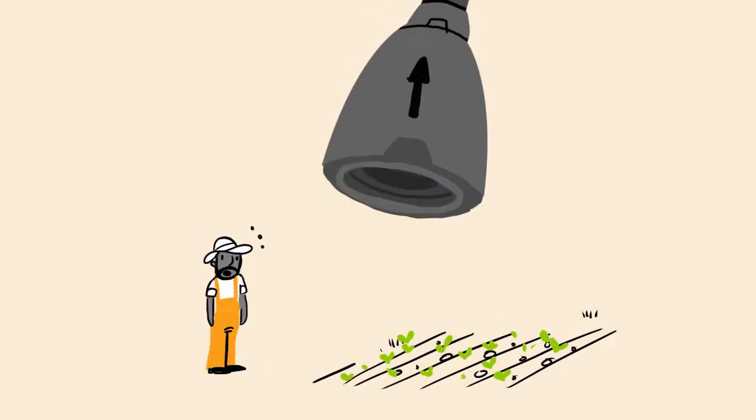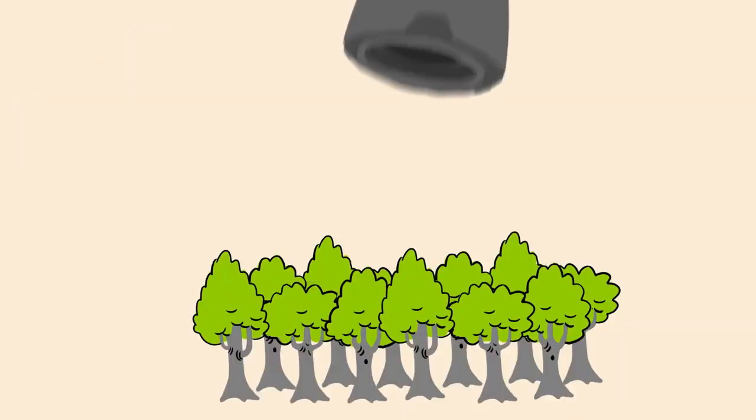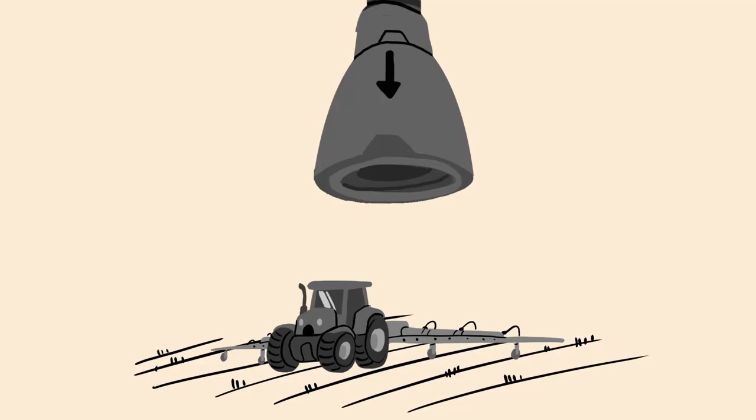The growth machine consumes resources and spits out rubbish. Our seas are being emptied of fish and filled with plastic. It chops down the last remaining forests to turn them into agro-industrial wastelands.